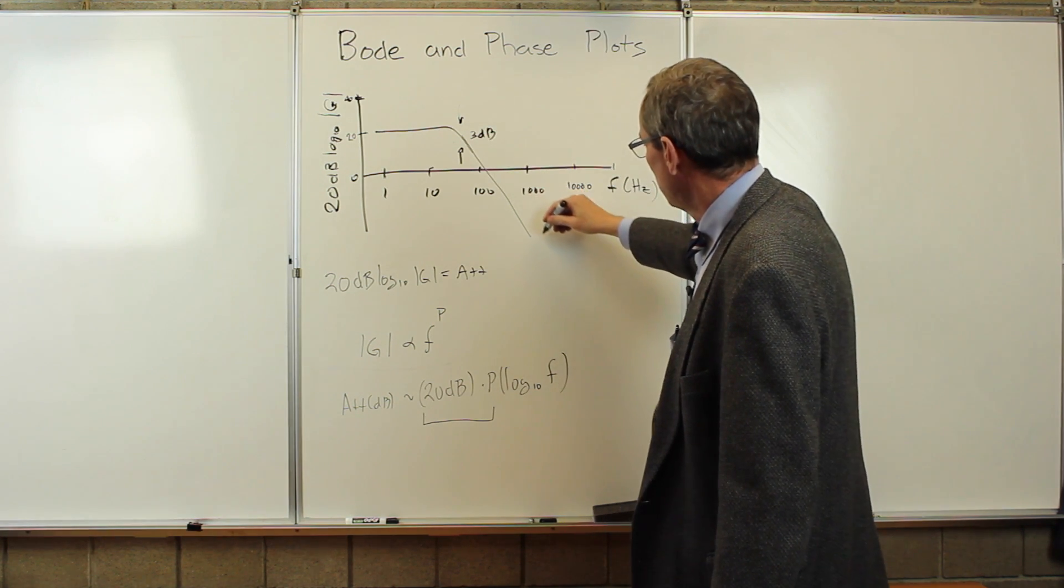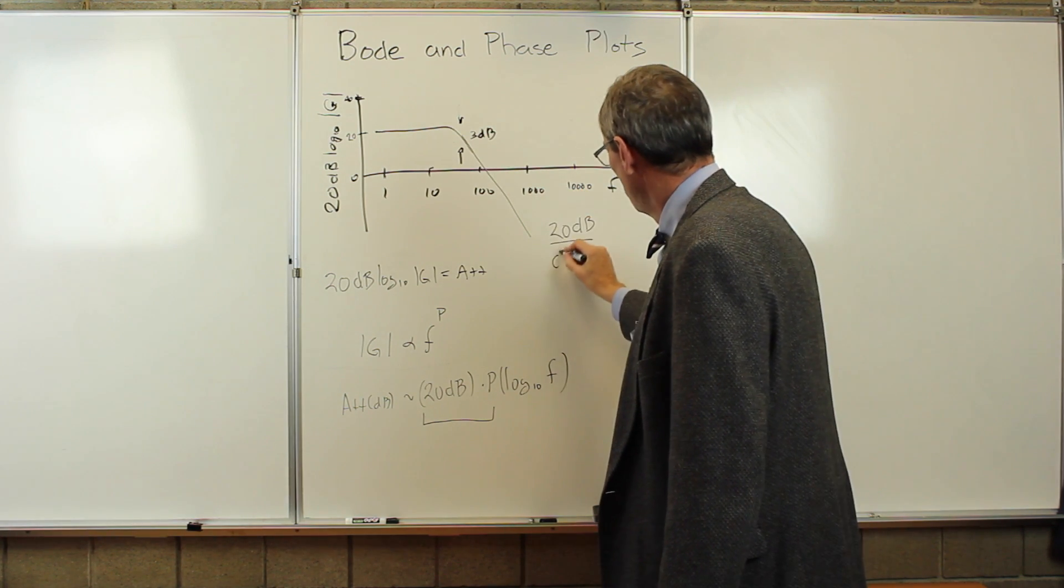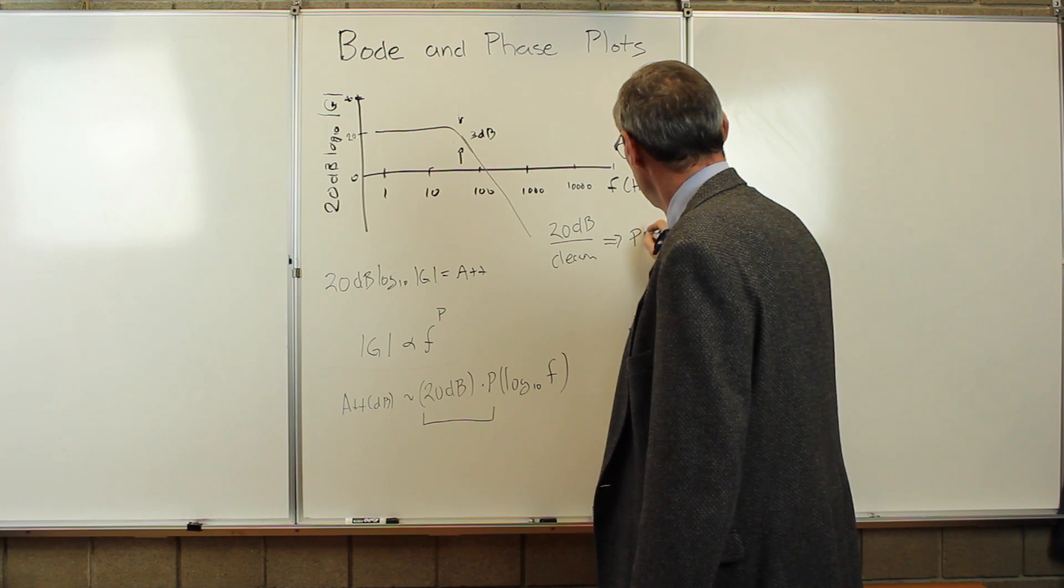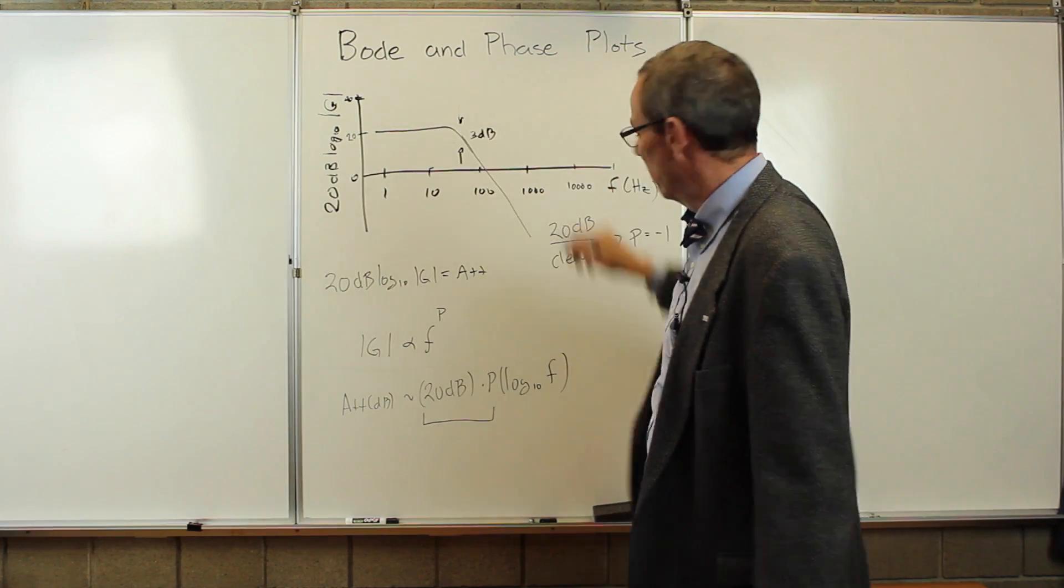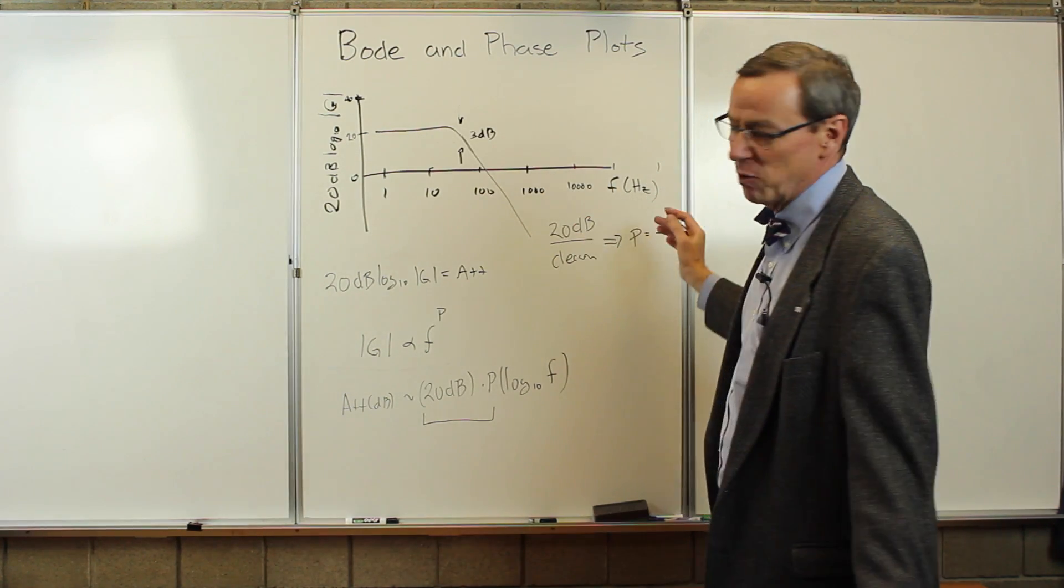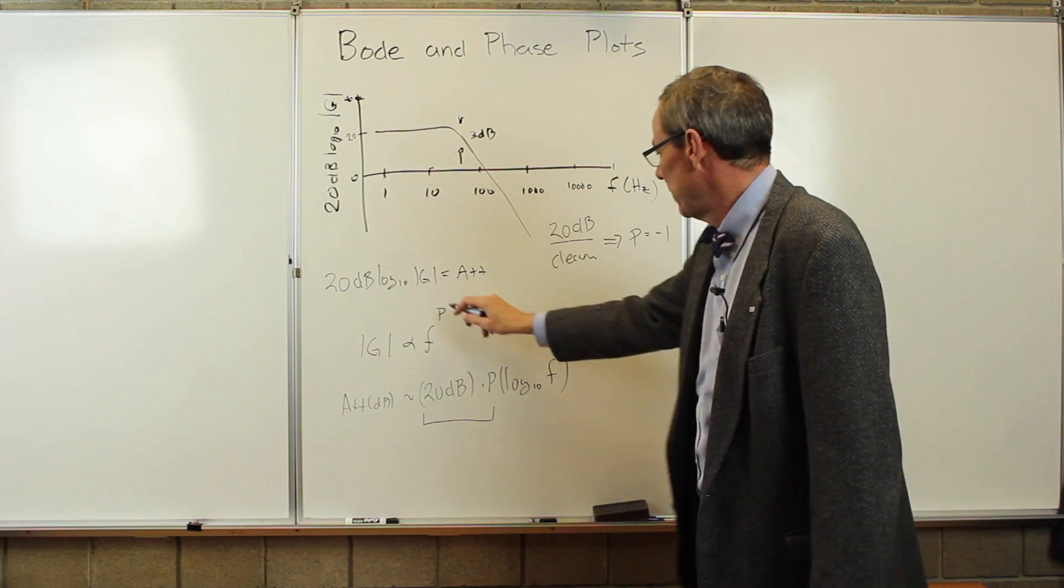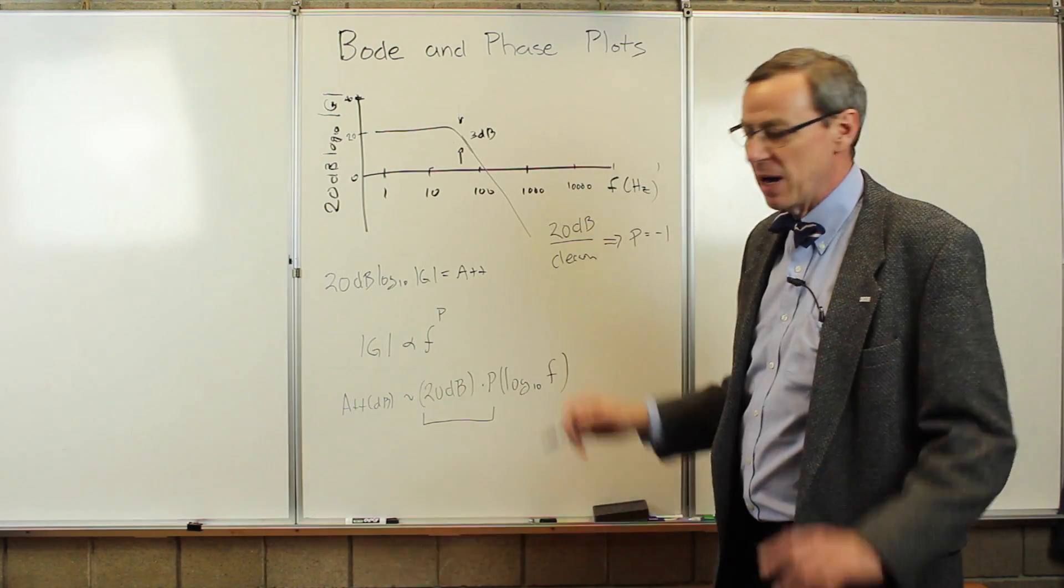So if it's falling at 20 dB per decade, per power of 10, that means the power is minus 1. If it's rising at 20, the power is plus 1. If it's rising at 40, the power is plus 2. So a linear curve here, the slope gives us the power in that power law expression.